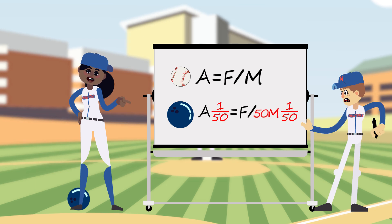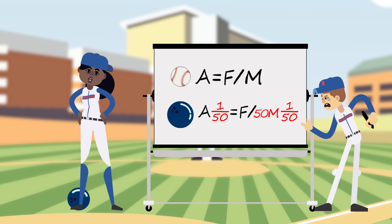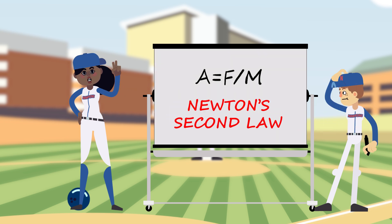So if you take the 50 out of this side, you find that the acceleration from the bowling ball pitch is 1/50th the acceleration of the baseball pitch. Much slower. That's Newton's second law in action: acceleration equals net force divided by mass.